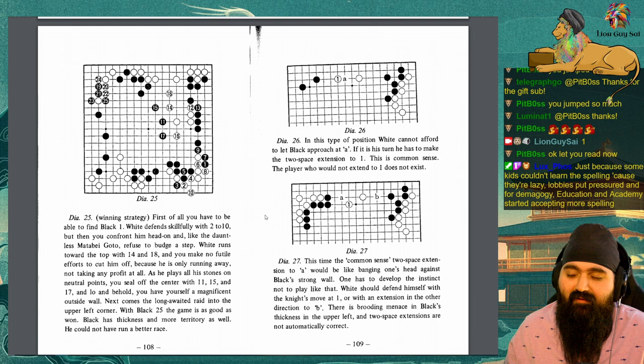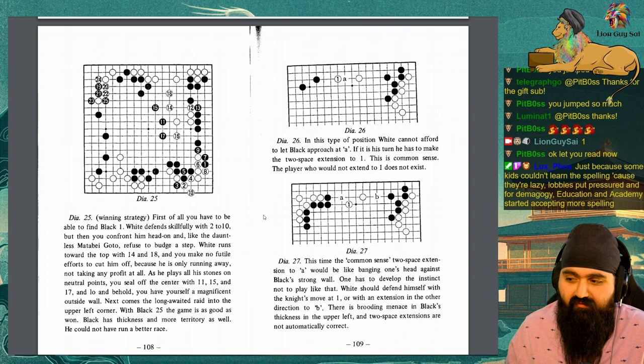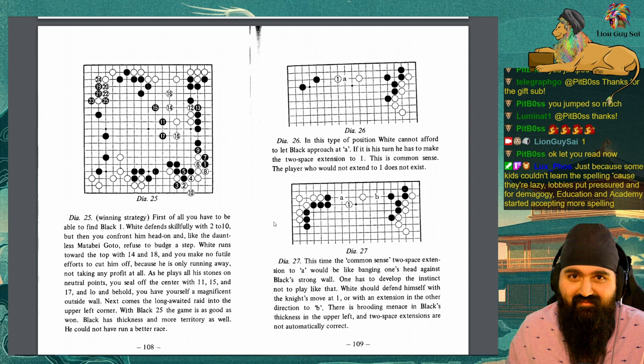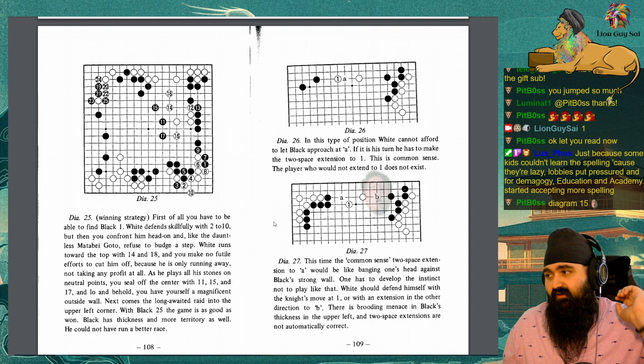Diagram 25. Winning strategy. First of all, you have to be able to find black 1. White defends skillfully with 2 to 10. But then you confront him head on and, like the dauntless Matabe Goto, refuse to budge a step. White runs towards the top with 14 and 18, and you make no futile efforts to cut him off, because he is only running away, not taking any profit at all. As he plays all his stones on neutral points, you seal off the center with 11, 15, and 17, and, lo and behold, you have yourself a magnificent outside wall. Next comes the long-awaited raid into the upper left corner. With black 25, the game is as good as won. Black has thickness and more territory as well. He could not have run a better race.